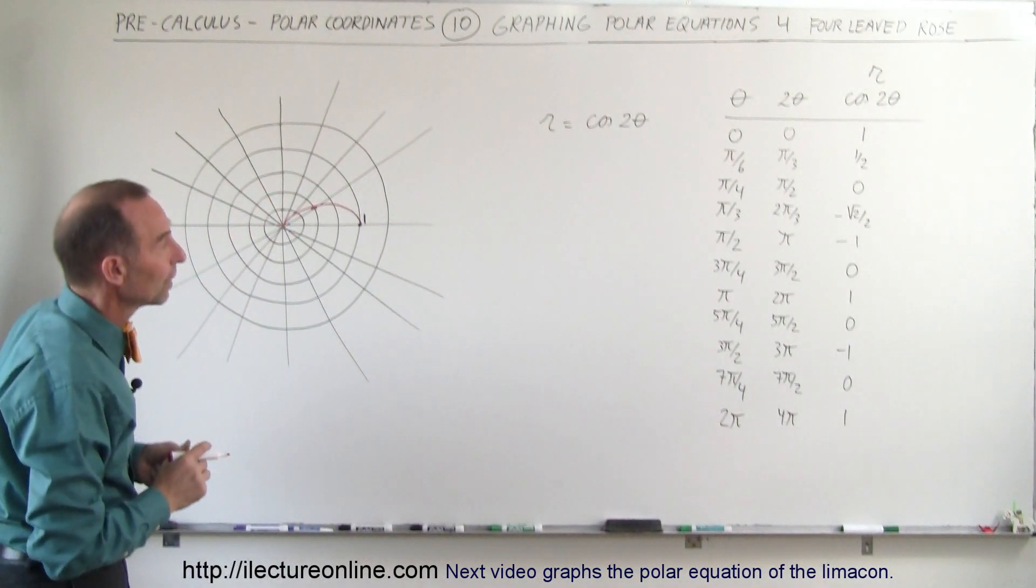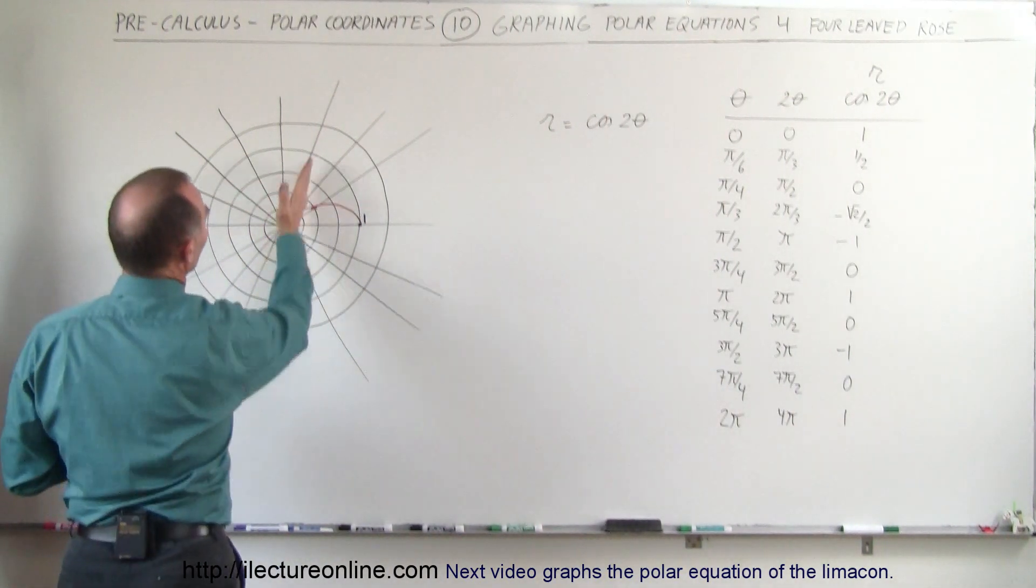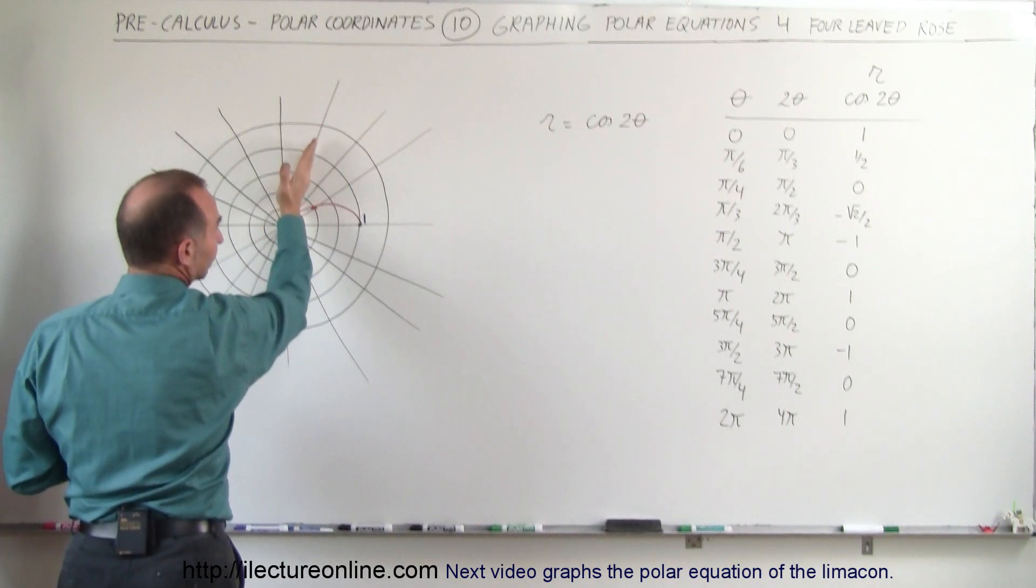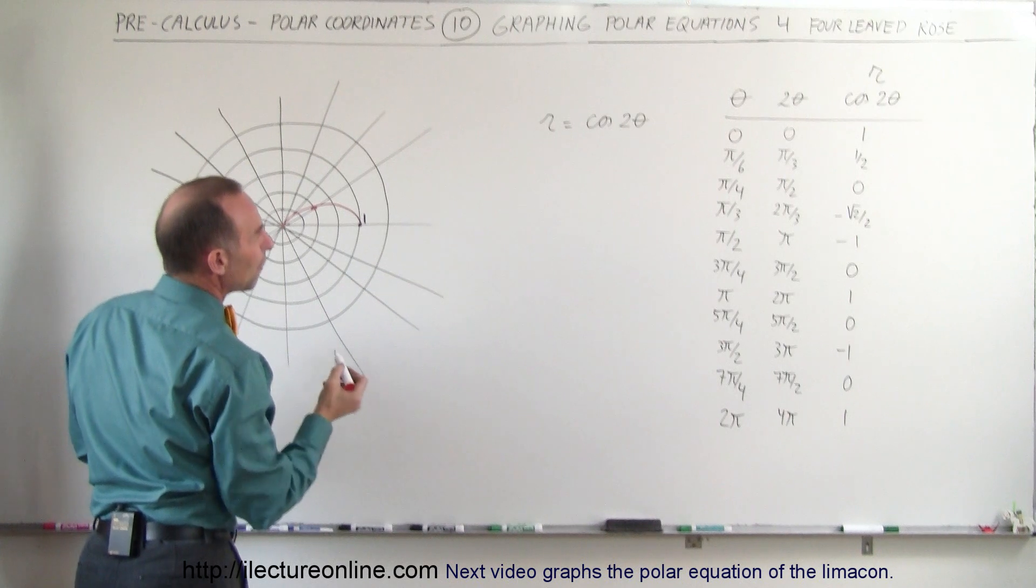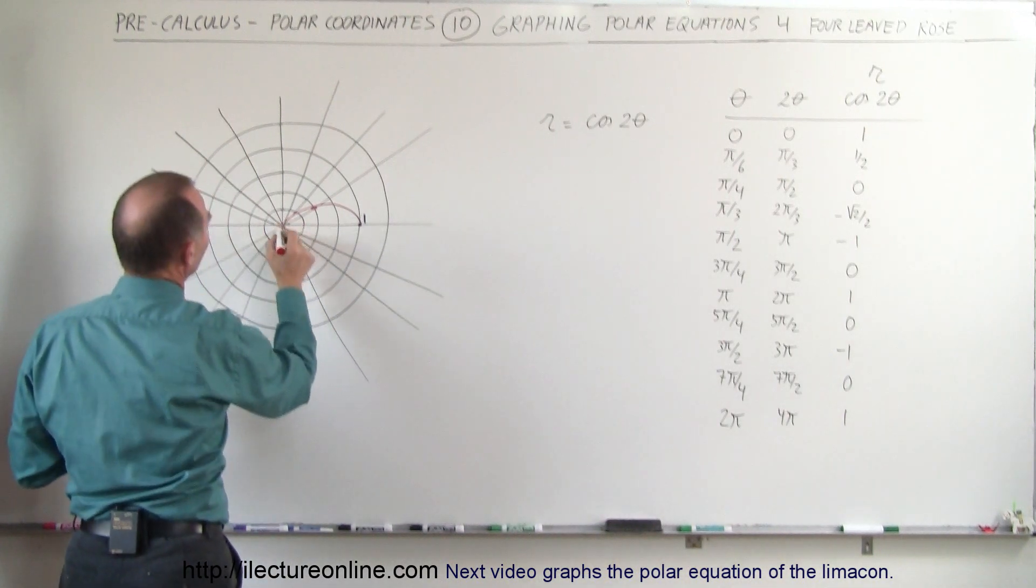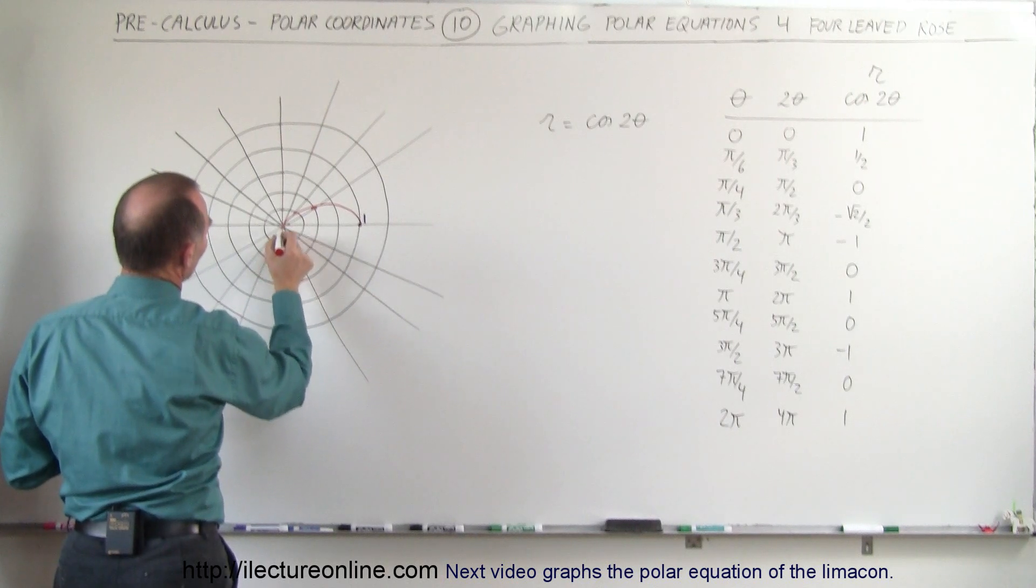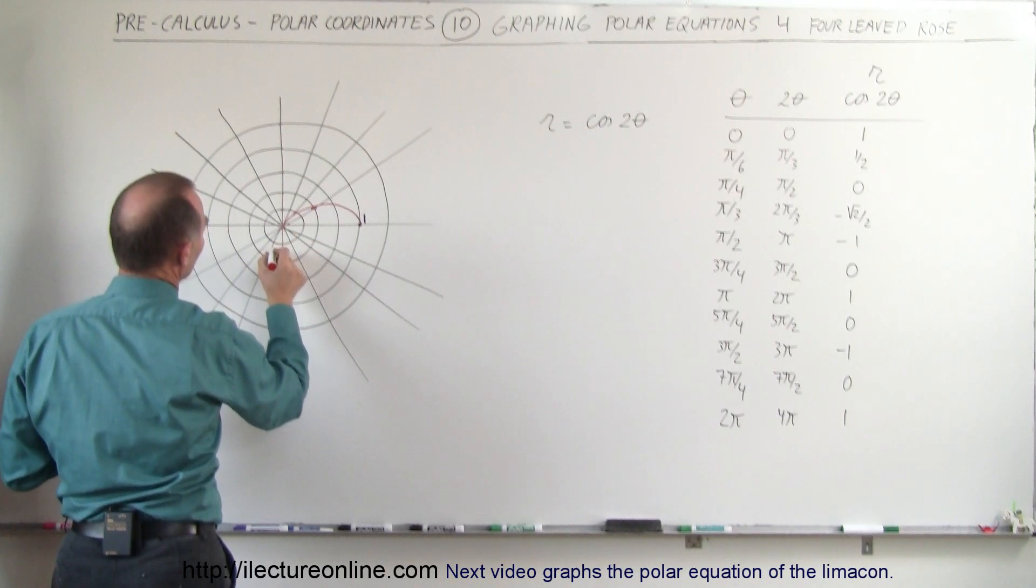Now how does it continue? At pi over 3, which is at this angle right there, it is minus the square root of 2 over 2, which is minus 0.7. So at this point, minus 0.7 would be right over here somewhere, so it would be 0.5, 0.7 would be right about there.